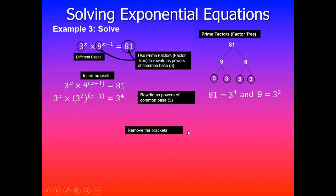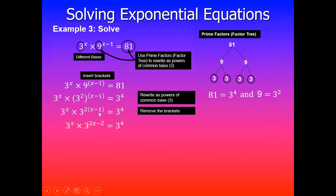So once we've written as a common base of 3, then we will need to remove the bracket here. So this gives us 3^x × 3^(2(x-1)) = 3^4, and then we remove the bracket here.